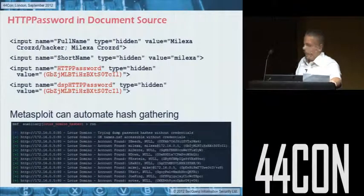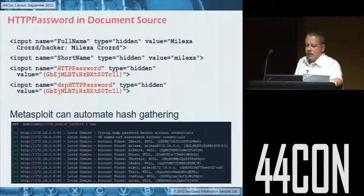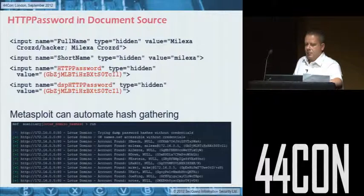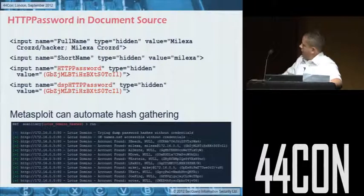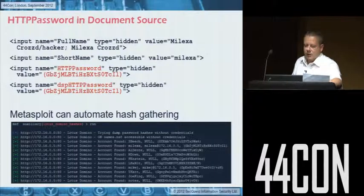To crack passwords, you grab them from the document source. There are a couple of different hash types — in John the Ripper these are associated with Lotus 5 and Domino Sec. Lotus 5 is a straight hash; Domino Sec is salted, so a bit stronger, but still not uncrackable. This is a rough example of the HTTP password in the document source: you've got the username, HTTP password, and the hashed value. The brackets around it show it's the more secure Domino password type. Best to split them into salted and unsalted when running through John. Metasploit also has an auxiliary module — Lotus Domino Hash — to automate gathering hashes from the name and address book, and Nmap has a module too.